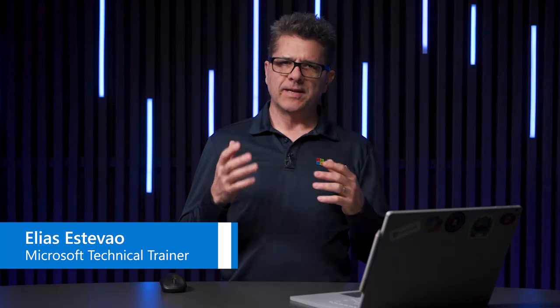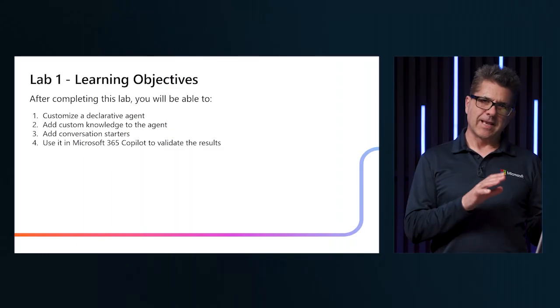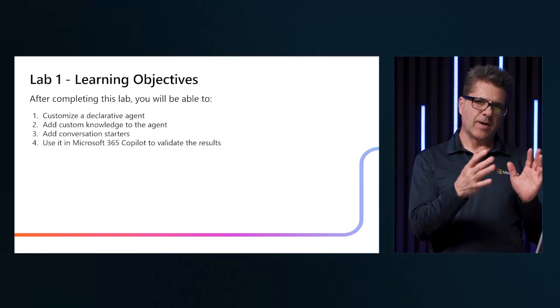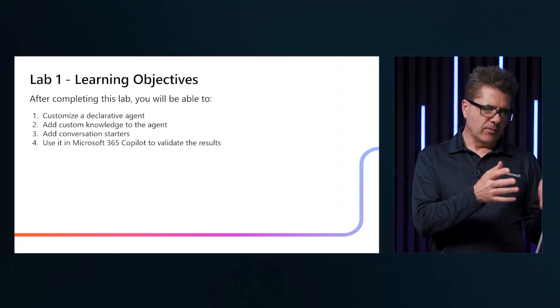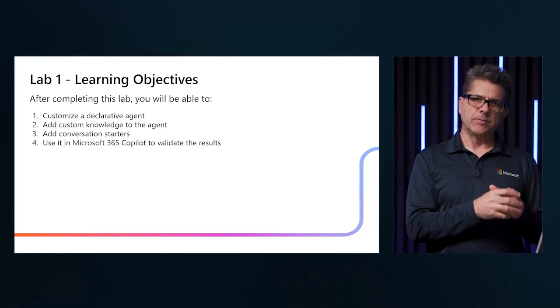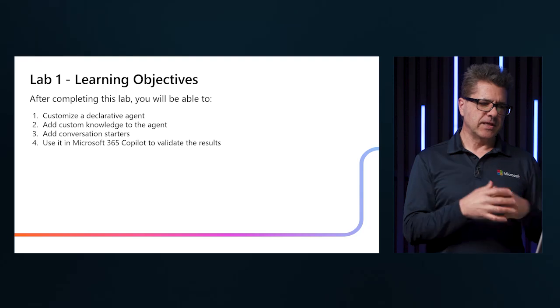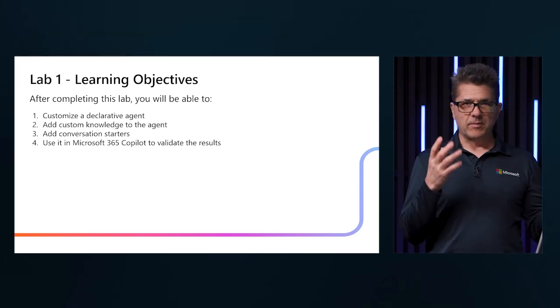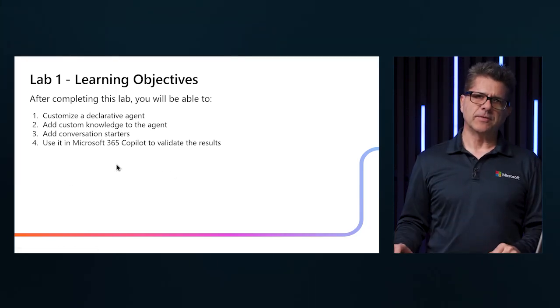Welcome back. In this module, we are going to take a closer look at how to build a declarative agent using Microsoft Visual Studio Code. For this lab, we are going to first customize the declarative agent, then add knowledge to our agent in exercise two, and finally add a conversation starter and publish the agent to Microsoft 365.